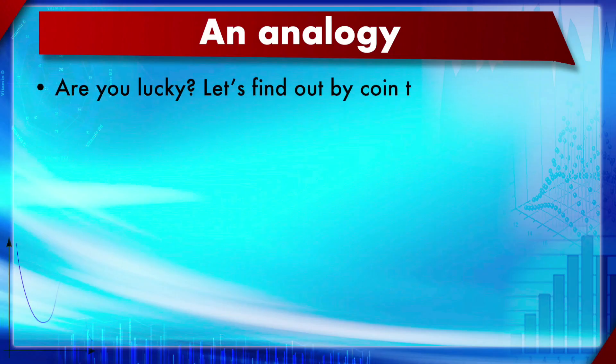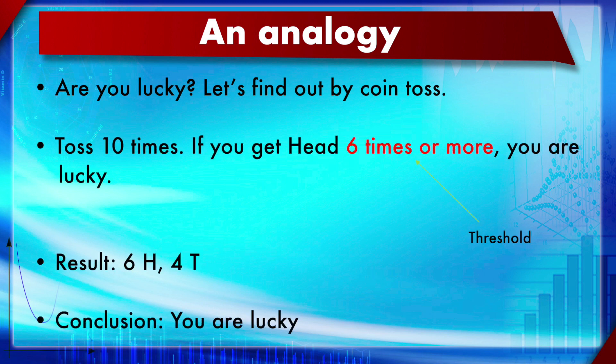A simple analogy: suppose we have a hypothesis — are you lucky? To test this, we do a coin toss experiment — toss a coin 10 times. If you get six or more heads, you are deemed lucky. This arbitrary cutoff or threshold value is known as the significance level. Six was chosen arbitrarily; it could have been five.